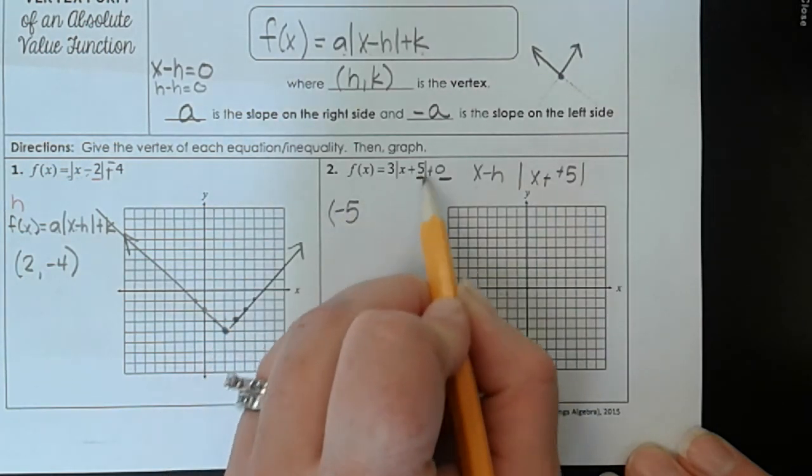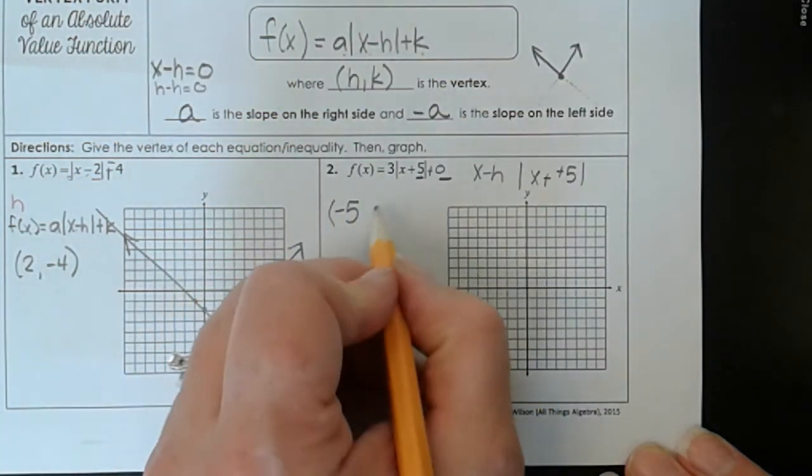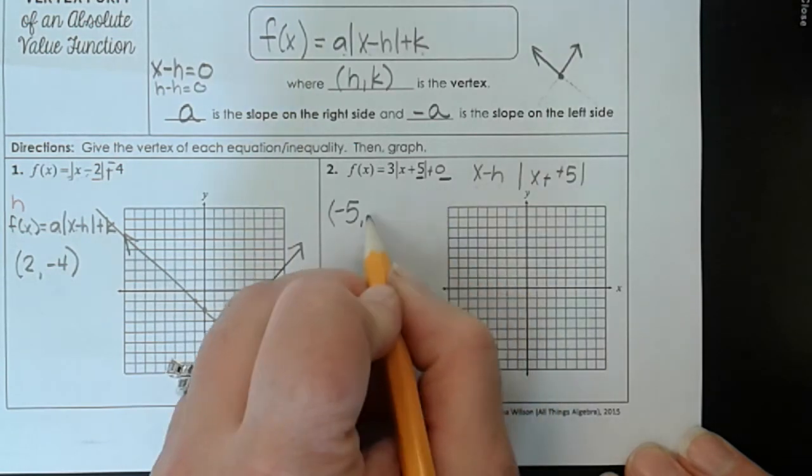And again that makes sense. Negative 5 plus 5 gives us 0 in here. That's going to be our x-coordinate of our vertex. Our y-coordinate of our vertex is k, which is 0.